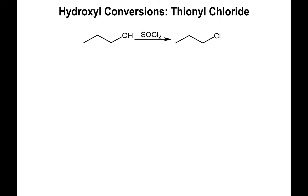It may be the case that you want to turn the alcohol into a leaving group. You could do that with tosyl chloride, turning it into a tosylate, or you could use a new reagent — thionyl chloride — which will convert your hydroxyl group into a chloro group. That's a fairly good leaving group.